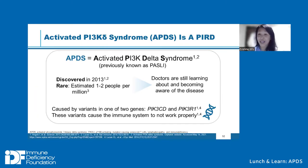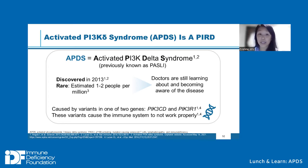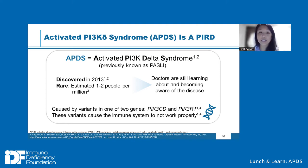What brought us all here is Activated PI3 Kinase Delta Syndrome, or APDS, which happens to be an example of a primary immune regulatory disorder. APDS was first discovered in 2013 and is currently estimated to affect about one to two people per one million persons. Since 2013 is relatively recent in science, we are still learning a lot about APDS and trying to increase awareness about the disease.